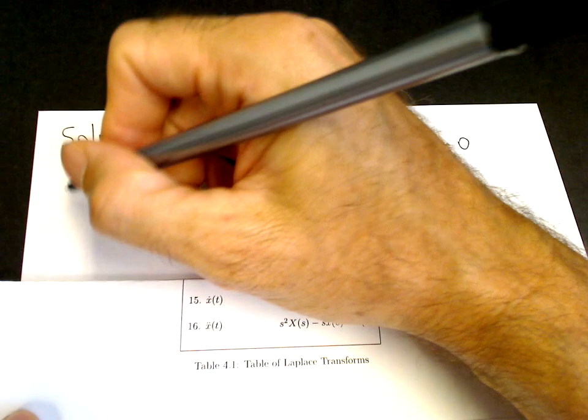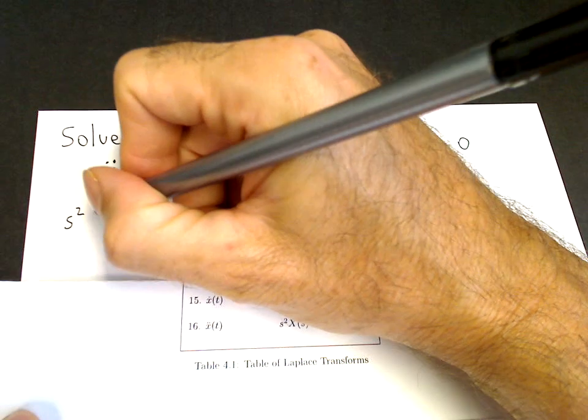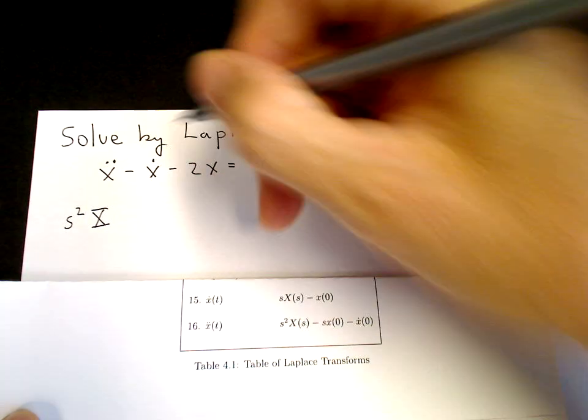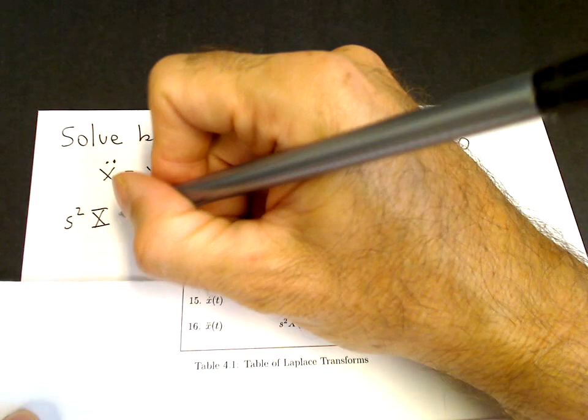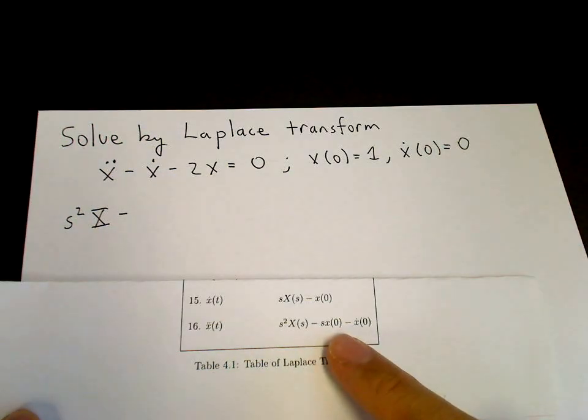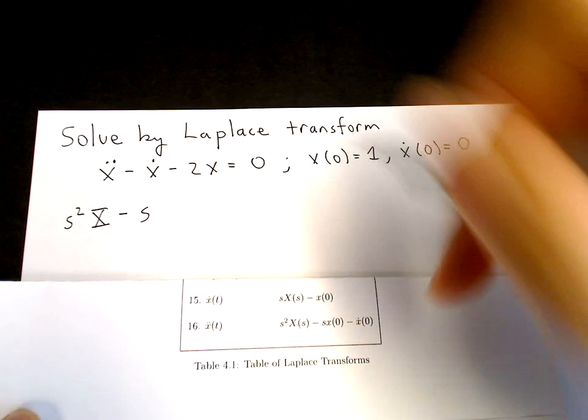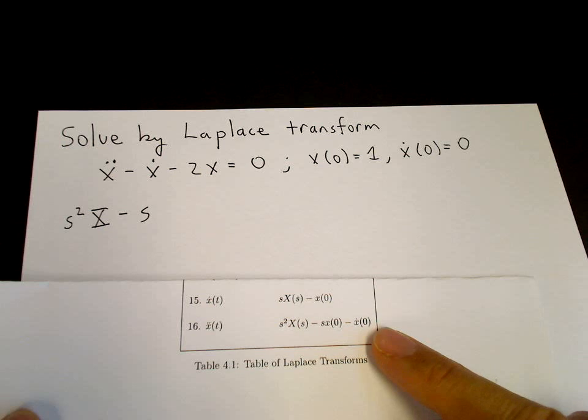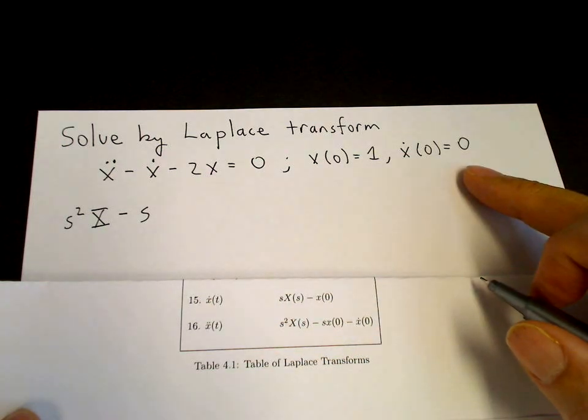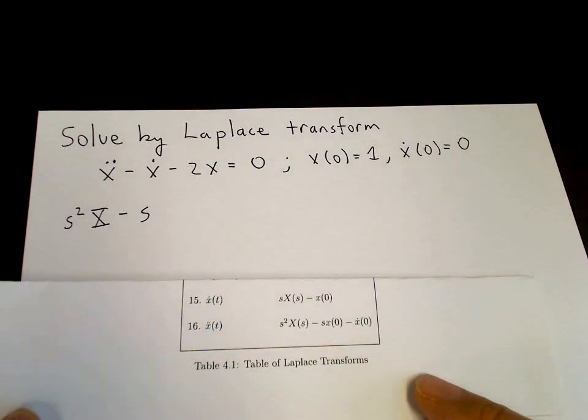So we have S squared capital X of S, minus S times X of 0, X of 0 is 1, minus S, minus X dot of 0. X dot of 0 is 0, so that covers X double dot.